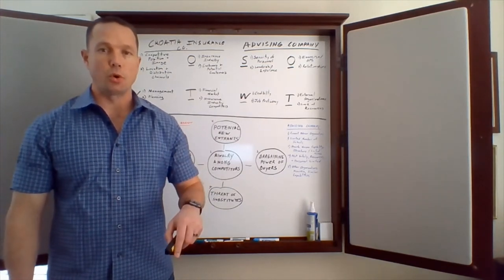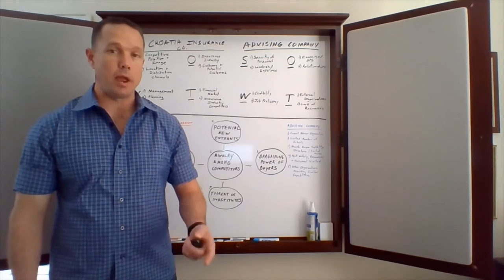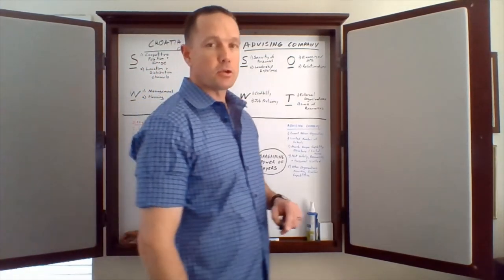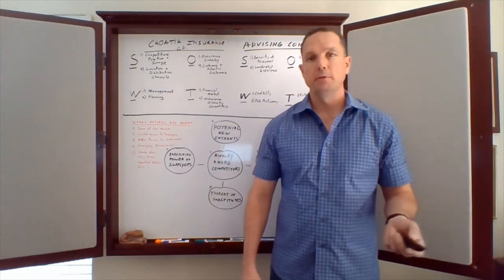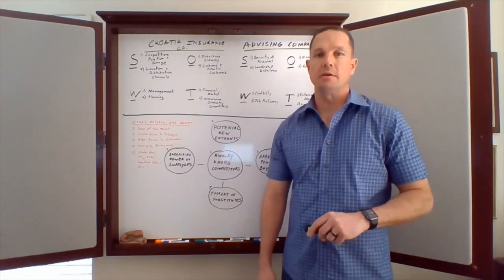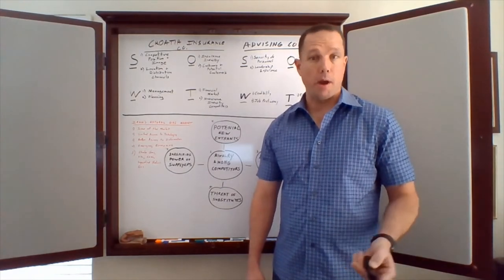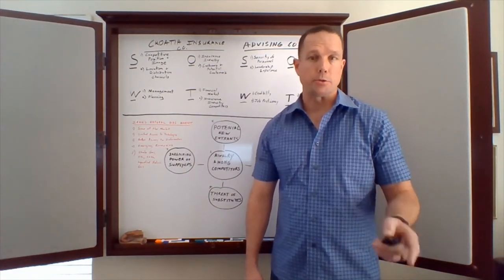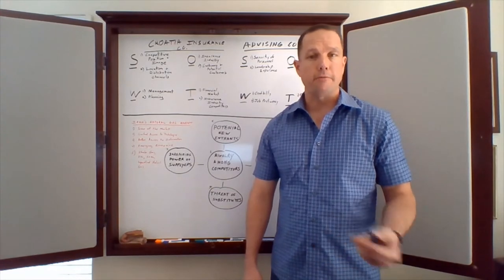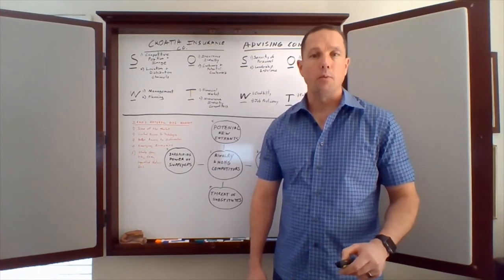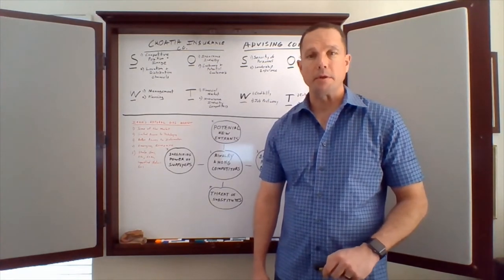The two organizations that I'm going to take a look at today is Iran as a country and then my advising company as well. With that five forces model, the factors that influence a competitive position of an organization through the bargaining powers of your buyers, bargaining power of your suppliers, the threat of new entrants, what are the substitutes out there, and what are the rival existing companies out there.